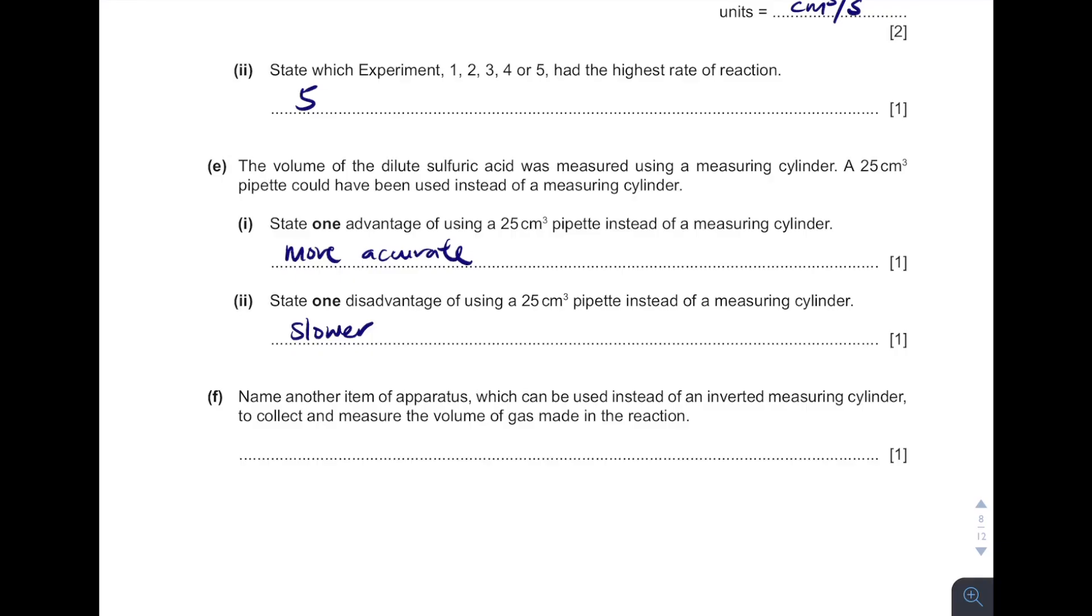Then name another item that can be used to collect and measure the volumes of gas. Remember, there are two apparatus can be used to collect and measure the gas. One, it is the measuring cylinder through water displacement. And then we can use gas syringe.